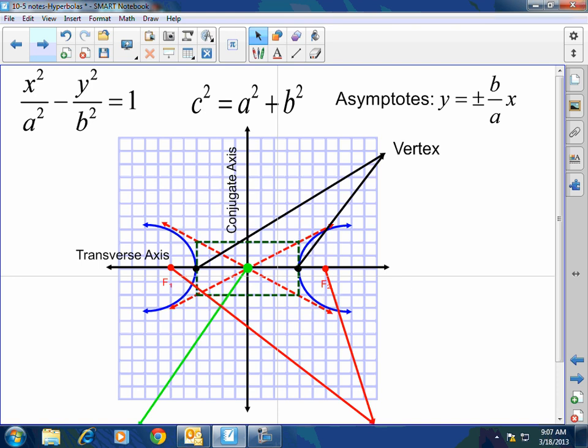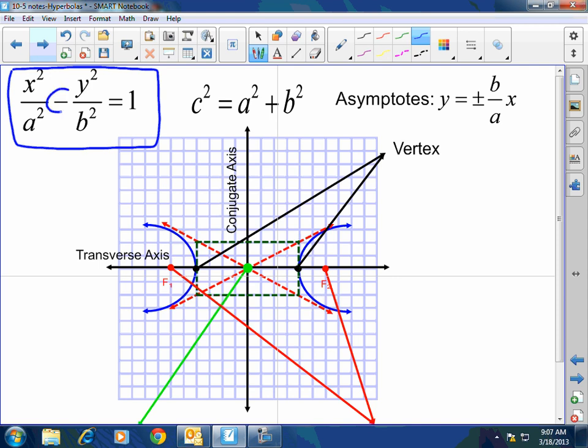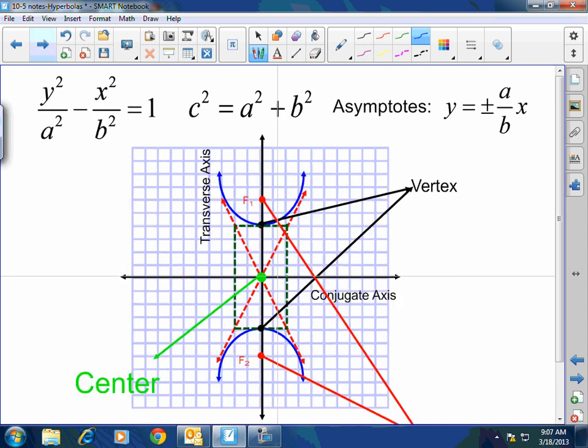Also, you're going to know that it's a horizontal because in this particular case, please pay attention to the formula. It's similar to the ellipse, similar, except one major difference. There's a minus in the middle. It's x squared over a squared minus y squared over b squared. It's not going to be determined this time by who's bigger or not. In the vertical one, you're going to have the y value first.